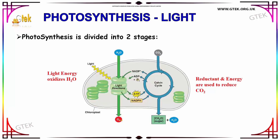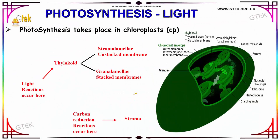It gives oxygen and it gives sugar. We can see the two stages here. Photosynthesis takes place in the chloroplast. When the light reaction occurs, the thylakoid forms two stages: stroma lamella, which is also called unstacked membrane, and another one is grana lamella, that is stacked membranes.